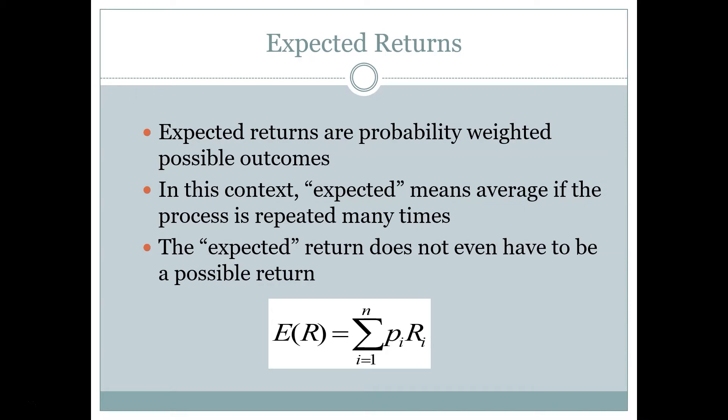So expected returns are our best guess about what will happen in the future if we take a specific action. And they're based on the average outcome of taking that action a million different times, a huge number of times in the future. And that's really the best we can do because we don't know the future.